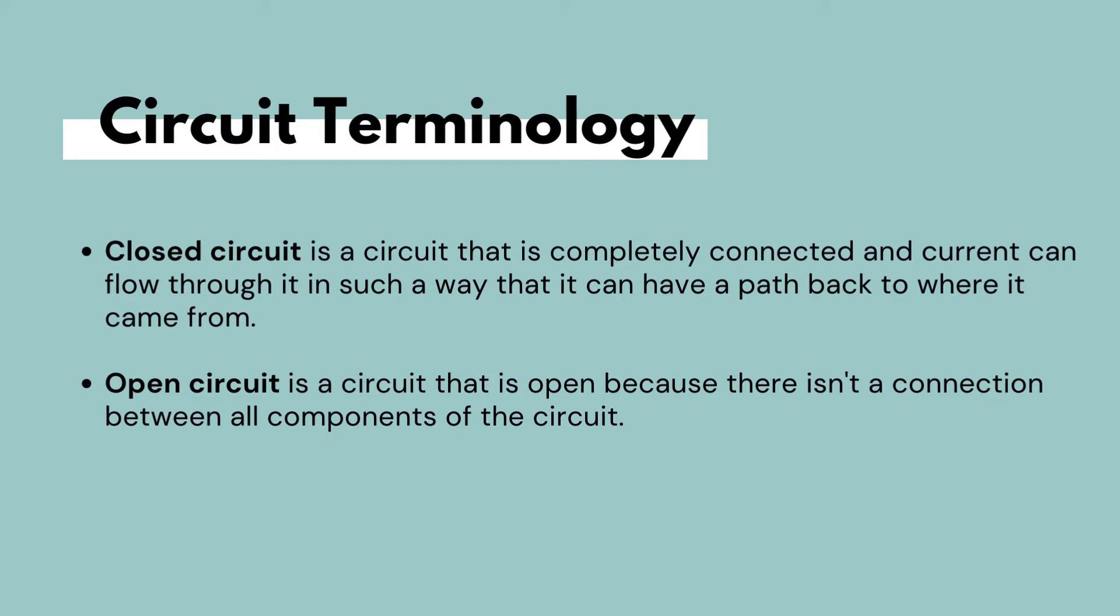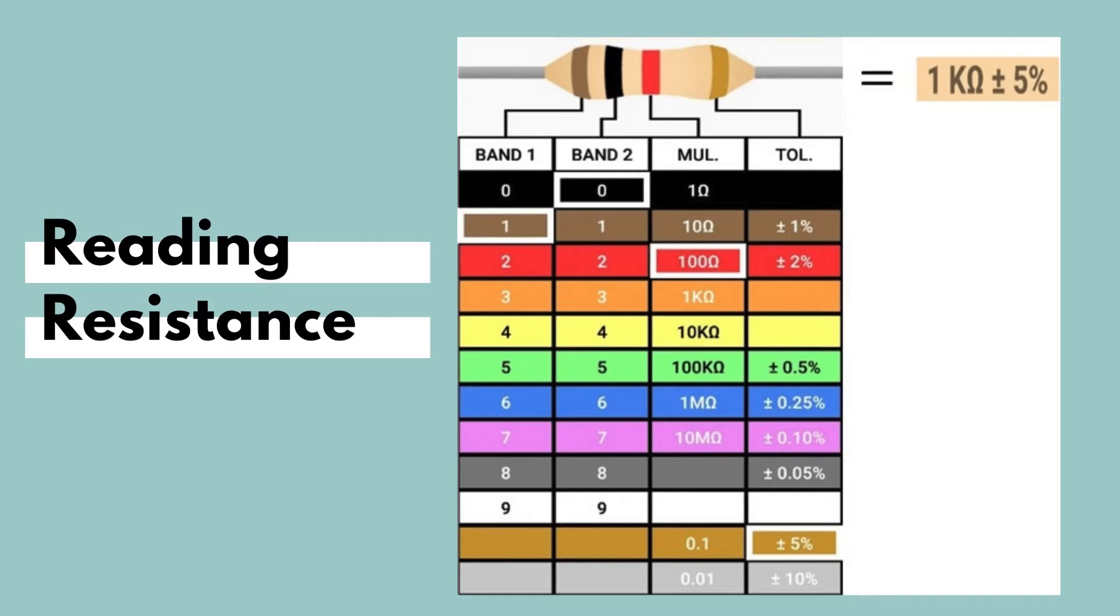Now let's talk about how we can measure resistance. Many components are labeled or color-coded to identify their value and function. One of those components are resistors. Resistors use colored bands to quickly identify a resistor's resistive value and its percentage of tolerance, as seen in the table in the slide. Each color, or colored band, represents a value.